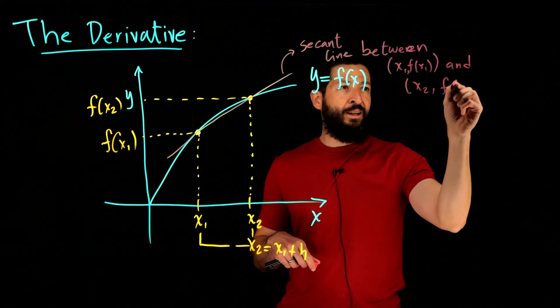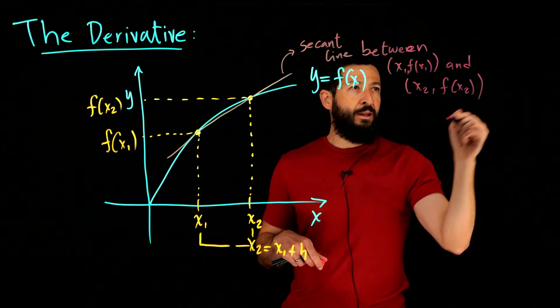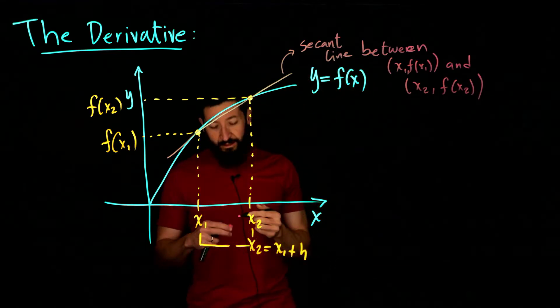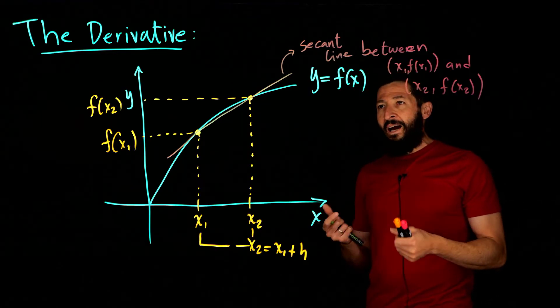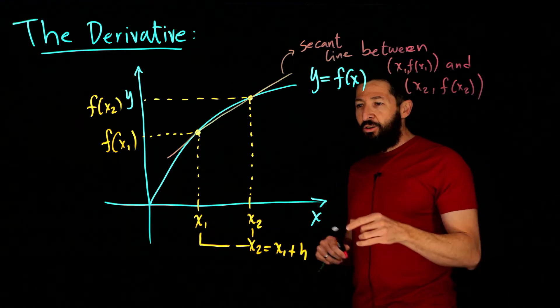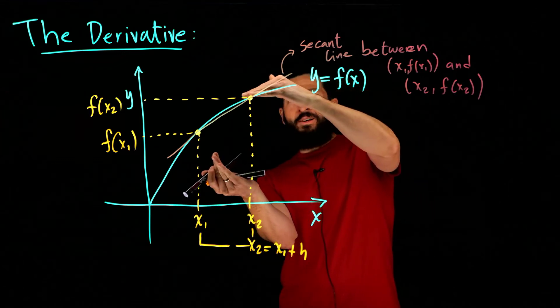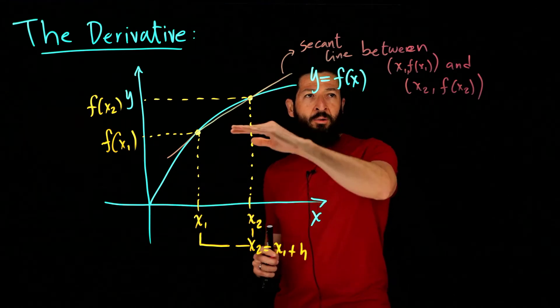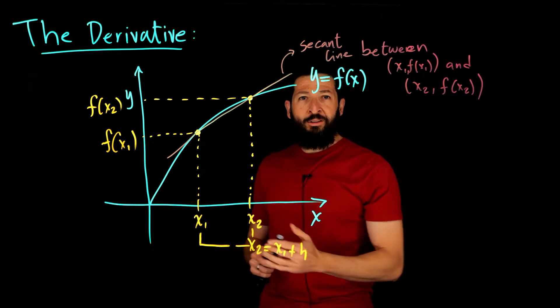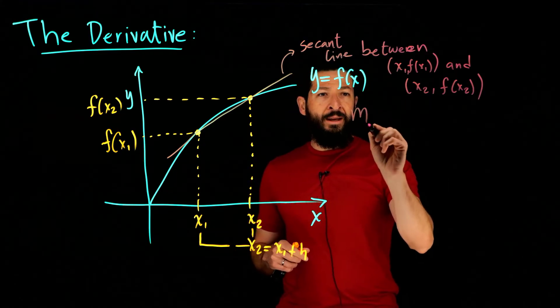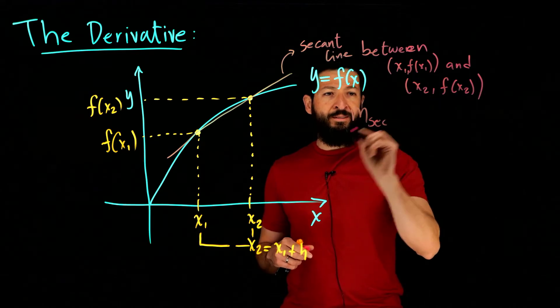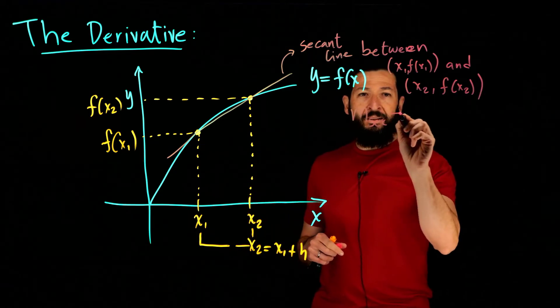x2 comma f of x2. That secant line, the slope of that line, would be what we call the average rate of change. So that would give us how much is the function changing in the y coordinate as we move from x1 to x2. Let's write that slope. Normally the slope we write it with m, and we will denote it as m of secant line.